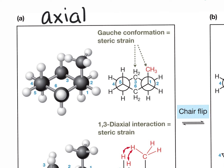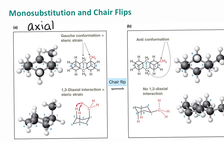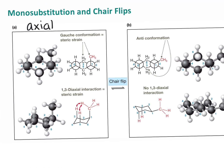That significant steric strain makes that conformation less stable. The other thing we can see here is in the chair position, shown right here, again with the blue numbers. Here's number one, and there's something called a diaxial interaction.